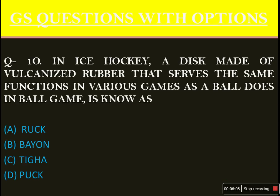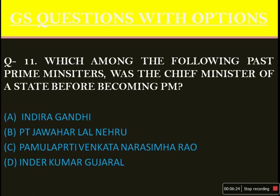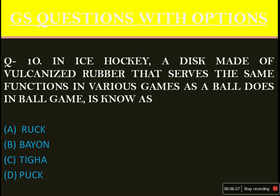In ice hockey, a disc made of vulcanized rubber that serves the same function as a ball in ball games is known as — the answer is a bit tricky — option D: the puck.